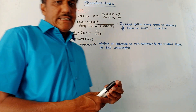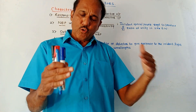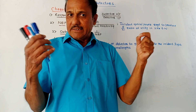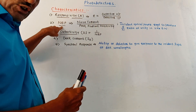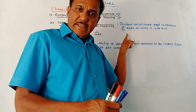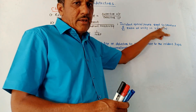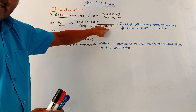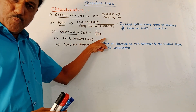Let us discuss a few important characteristics of photo detectors. First is responsivity. The output of a photo detector is an electrical quantity, usually a current, and the input is photons — that is light rays. So responsivity is the ratio of detector output to the detector input. Next is noise equivalent power (NEP). It is the incident optical power required to produce a signal-to-noise ratio of unity, that is 1, in 1 Hz bandwidth. It can also be defined as the ratio of noise current to the peak radiant sensitivity. Third is detectivity, which is the reciprocal of NEP.